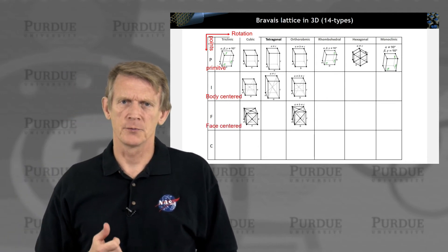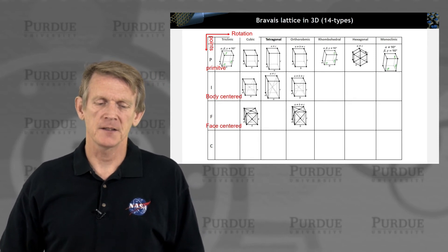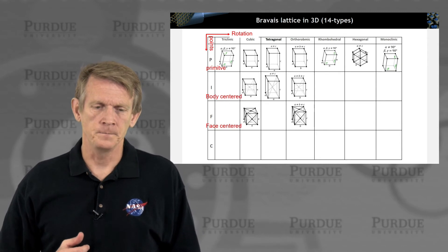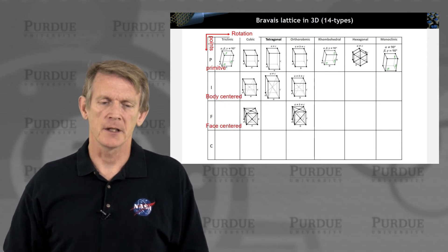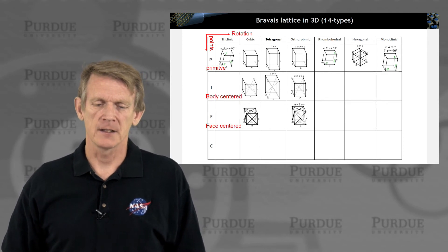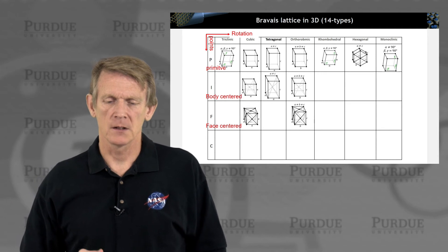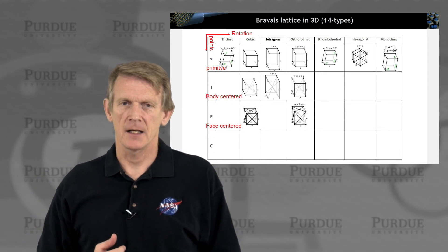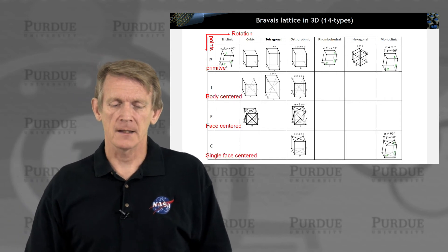There are face-centered groups. So you can take, for example, the cube, and on the six faces, add an atom and get the face-centered cubic, FCC Bravais lattice. And for orthorhombic, you have a similar crystal where you just added atoms on these surfaces. Finally, there are space groups called single-face-centered groups, and the orthorhombic on the monoclinic group.